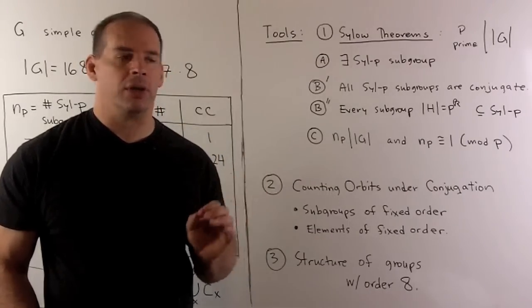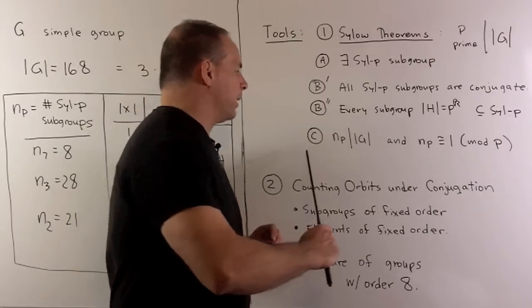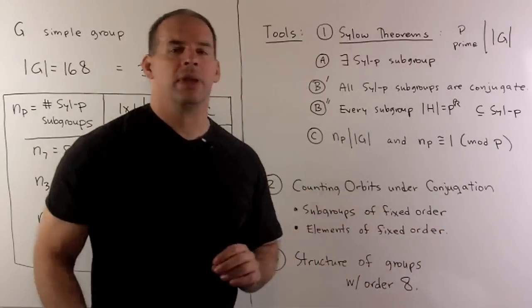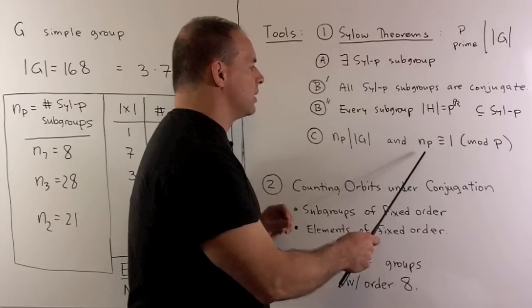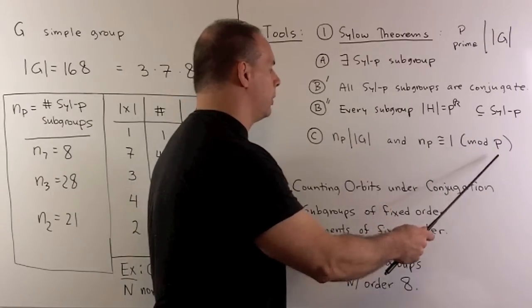Finally, third Sylow theorem. So, this is going to be where we do our numerical work. The number of Sylow P subgroups divides the order of the group, and the number of Sylow P subgroups is congruent to 1 modulo P.